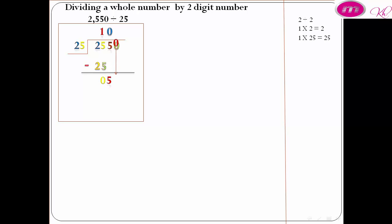It becomes 50. 50 divided by 25 equals 2. 2 above 0. 2 times 25 equals 50. 50 minus 50 equals 0.